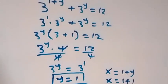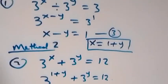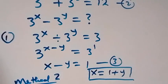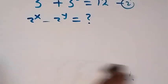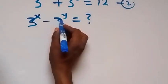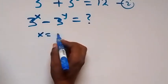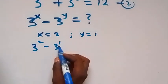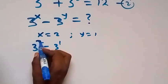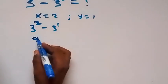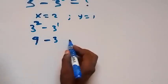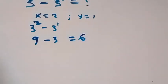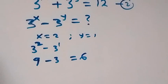Now we find the value of 3 raised to power x minus 3 raised to power y. Since x equals 2 and y equals 1, this becomes 3 squared minus 3 raised to power 1. 3 squared is 3 times 3, which is 9. So 9 minus 3 equals 6. Therefore, 3 raised to power x minus 3 raised to power y equals 6.